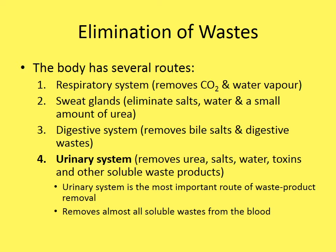The body has several ways to get rid of waste products. The respiratory system removes carbon dioxide and water vapor. Sweat glands eliminate various salts, water, and small amounts of urea. The digestive system removes bile salts and digestive wastes. The urinary system — today's focus — removes urea, salts, water, toxins, and other soluble waste products, and is the most important route of waste removal.